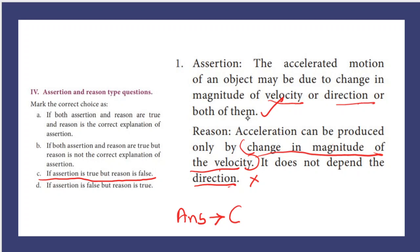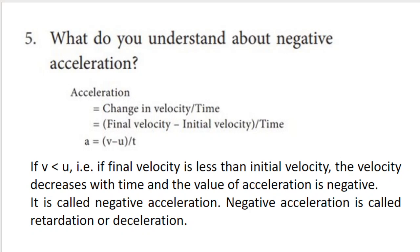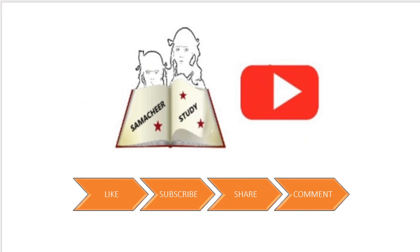Now let us answer the short answer questions. Define velocity: velocity is the rate of change of displacement and its unit is ms⁻¹. What do you understand about negative acceleration? Acceleration equals change in velocity divided by time, which is final velocity minus initial velocity divided by time. If the final velocity is less than the initial velocity, the acceleration is negative, known as negative acceleration or retardation. To compare speed and velocity: speed is the rate of change of distance and is a scalar quantity; velocity is the rate of change of displacement and is a vector quantity. Hope you understand these topics. Please subscribe and share with your friends. Thank you!